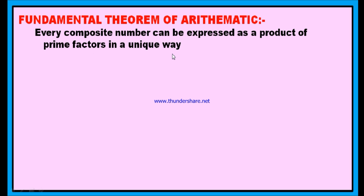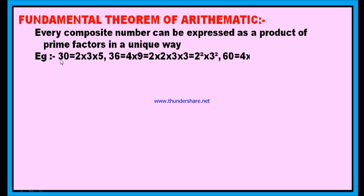Let us try to understand this statement with a given example. Now, if you look at this example, 30. You can write 30 as 2 into 3 into 5.